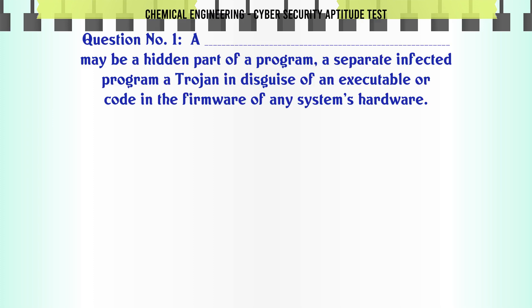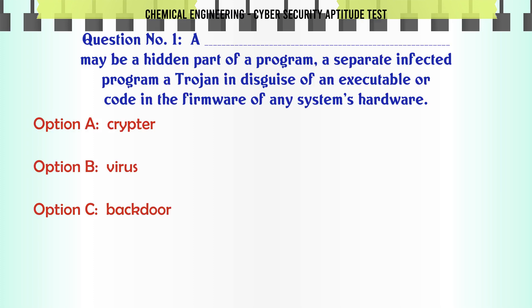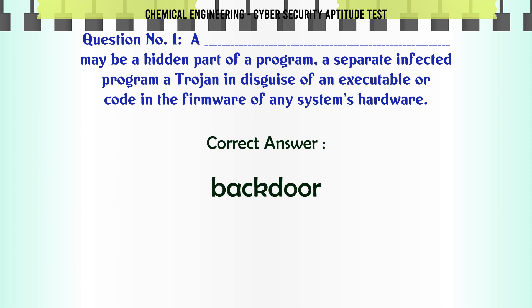May be a hidden part of a program, a separate infected program, a trojan in disguise of an executable, or code in the firmware of any system's hardware. A. Crypto. B. Virus. C. Backdoor. D. Keylogger. The correct answer is Backdoor.